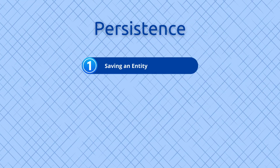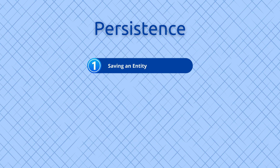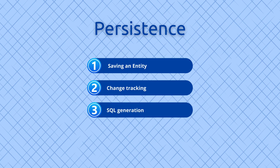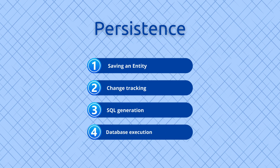Persistence — saving an entity: When you call the Entity Manager's persist method, Doctrine analyzes the changes made to the current object. Change tracking: Doctrine keeps track of changes to the object's properties. SQL generation: based on the changes, Doctrine generates the appropriate SQL statements — for example, INSERT or UPDATE. Database execution: the Entity Manager then executes the generated SQL statements against the database.